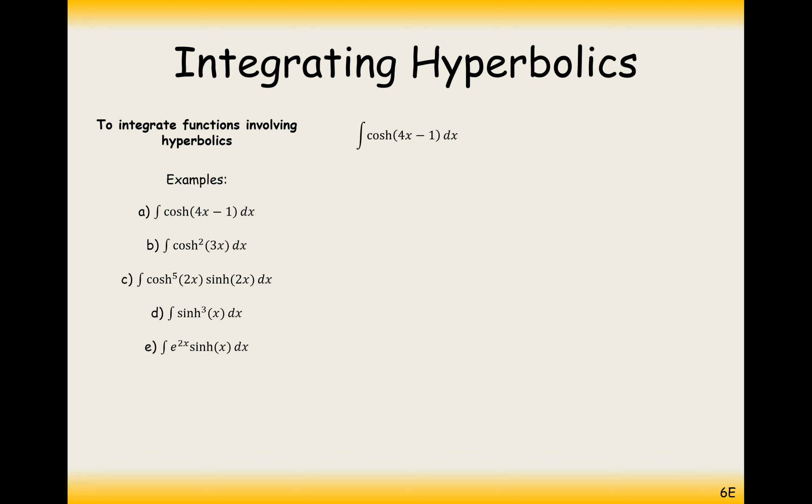Just a reminder, to differentiate you multiply by the 4 inside the brackets. But for integrating, it's the reverse, so we divide by the 4 to the front. The fact that we've got a minus 1 there won't affect the coefficient. So it's quarter sinh 4x minus 1 plus C. We divide by the coefficient factor and integrate cosh to sinh.